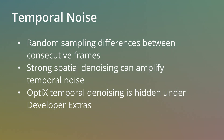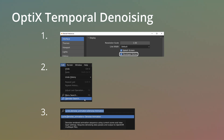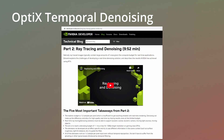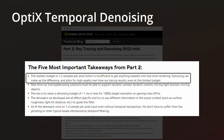Blender can perform temporal denoising using Nvidia Optix, though as of Blender 3.5 it is still hidden under the developer extras. The hardware-based AI denoiser is designed for ray-traced games, where it has to operate with a budget of 1-2 ray-traced samples per pixel. It's designed to be temporally stable even with extreme noise.